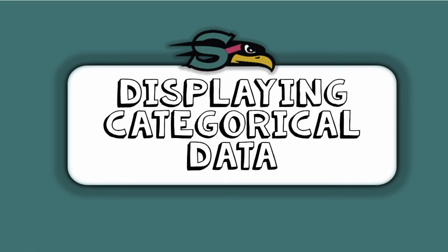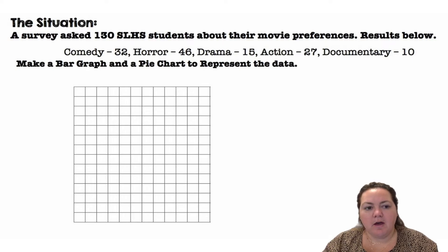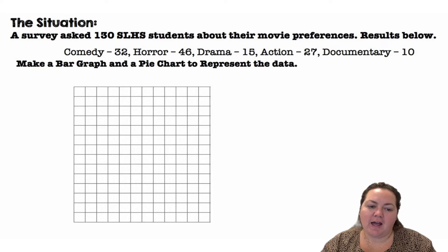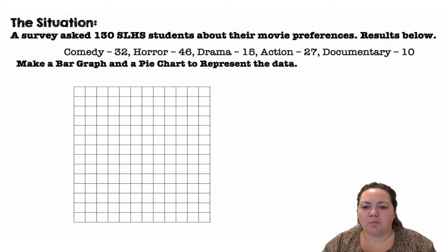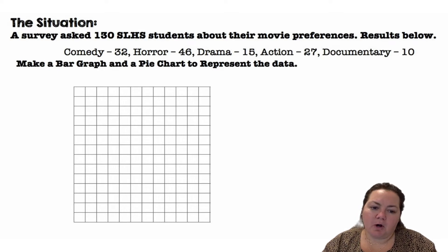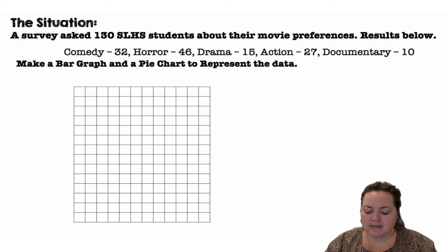Hey there Seahawks, it's Ms. Adams, and in this video we're going to learn about displaying categorical data. A survey asked 130 Sun Lake High School students about their movie preferences. Results are below. Make a bar graph and a pie chart to represent the data.